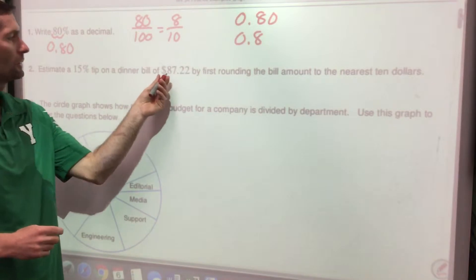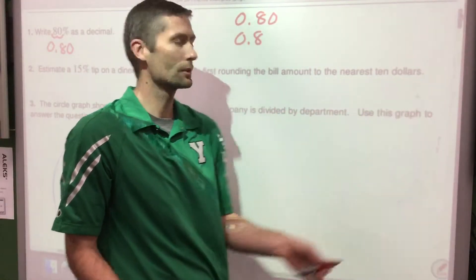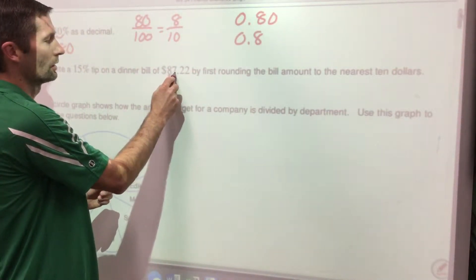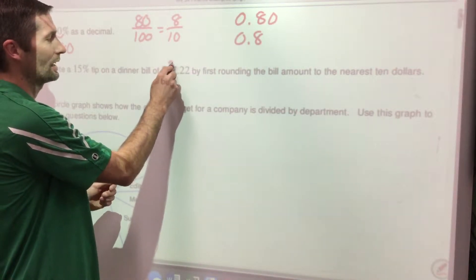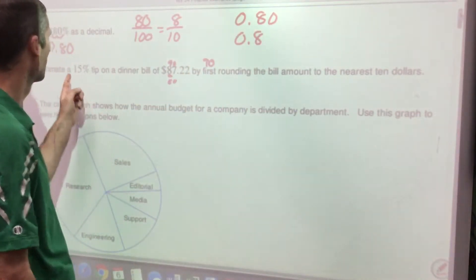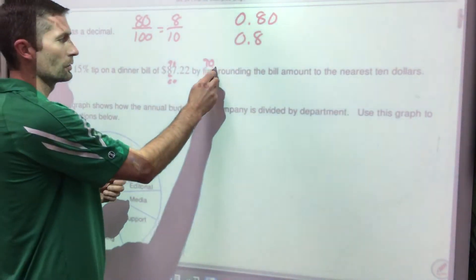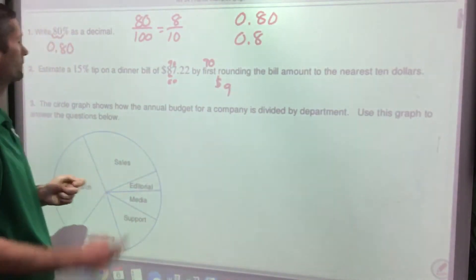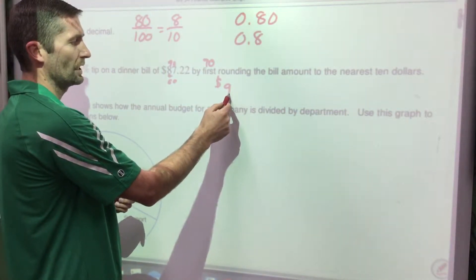Estimate a 15% tip on a dinner bill of $87.22 by first rounding to the nearest ten dollars. $87.22 is closer to $90 than to $80, so we round to $90. Now, 15% of $90: ten percent is easy — just move the decimal one spot — so ten percent is $9.